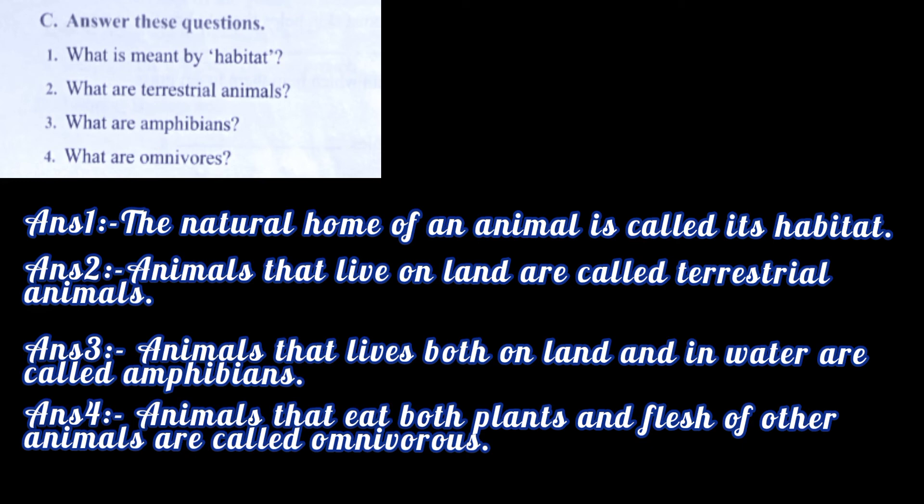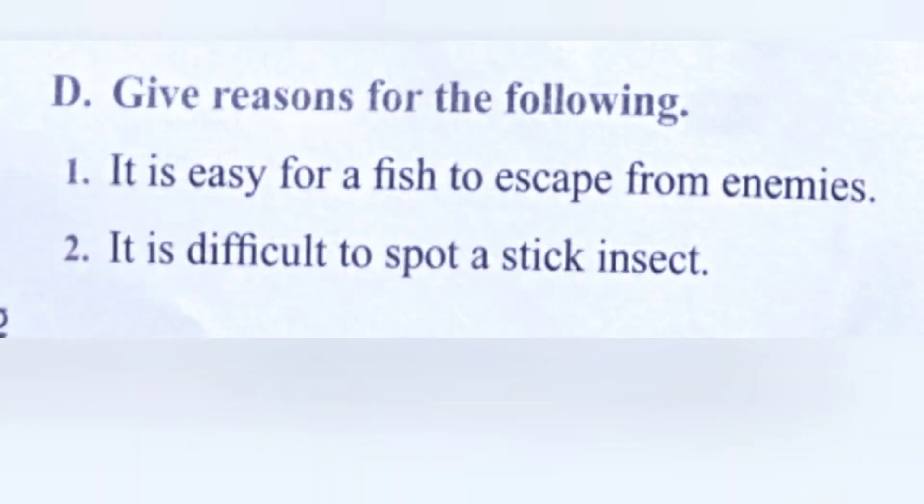Question three: what are amphibians? Answer: animals that live both on land and in water are called amphibians. Question four: what are omnivorous animals? Answer: animals that eat both plants and flesh of other animals are called omnivorous.